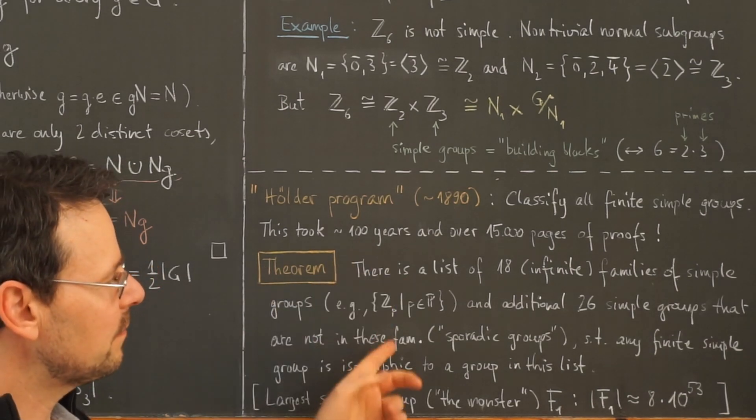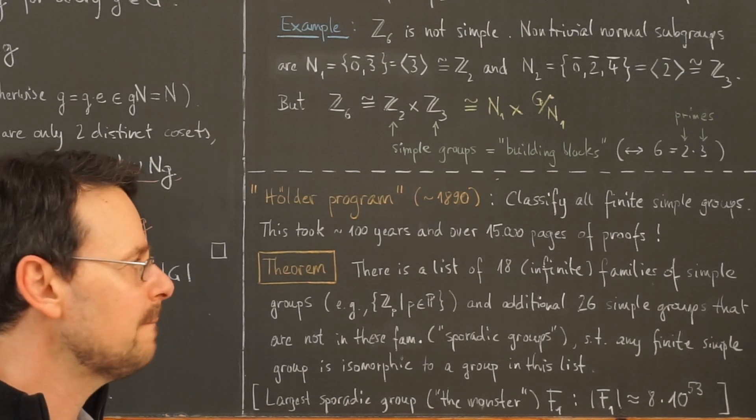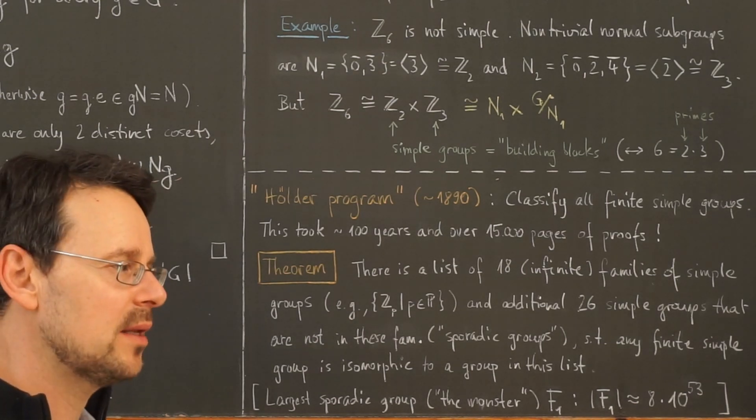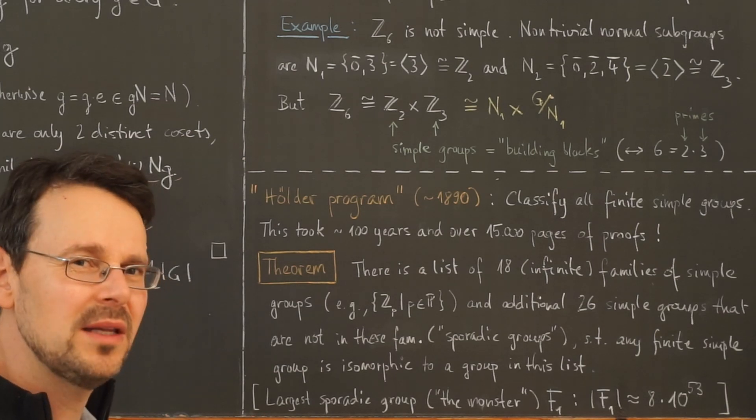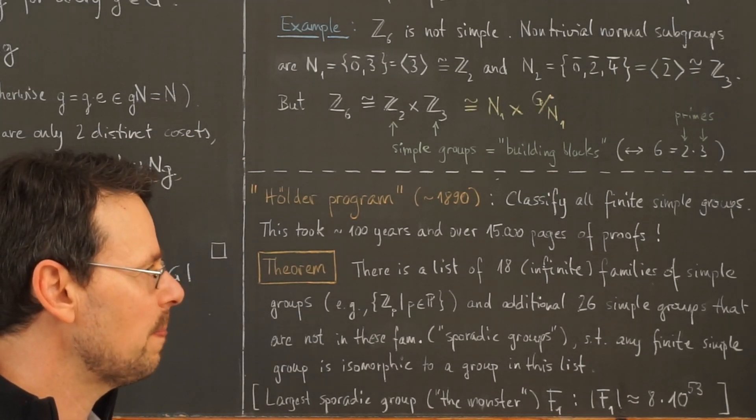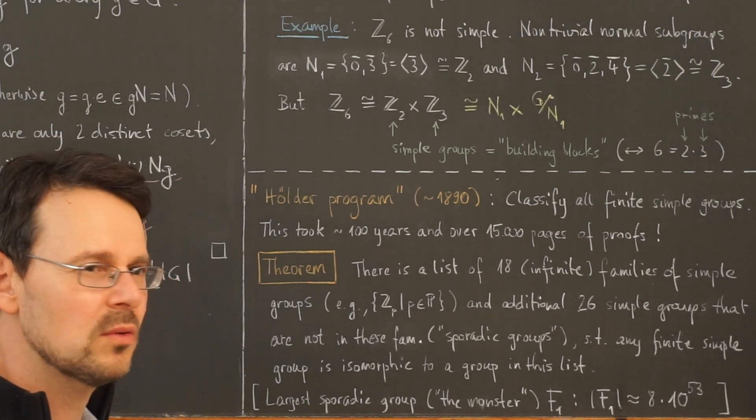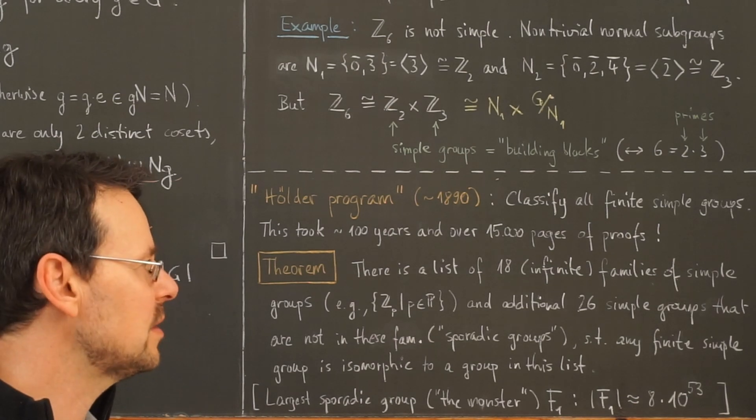Actually, the first version here was announced in 1982, I think. But there was a gap in a proof, and it took about 20 years till this gap could be closed by Ashbacher, I think. And the proof of this alone took over 1000 pages.